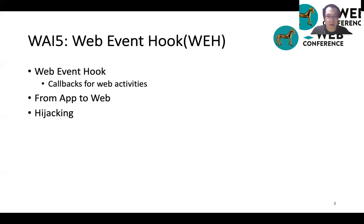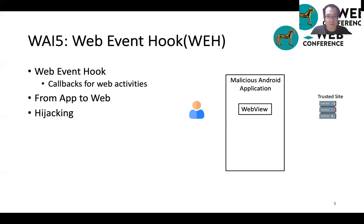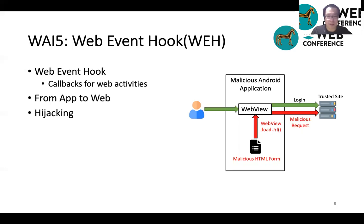The fifth mechanism is called Web Event Hook. WH provides a number of callback functions to intercept user activities. WH is the only mechanism that enables web app interactions from application to web content. To show the vulnerability of WH, here's an example. The user first logs into a trusted site through the WebView. The server returns a page for showing its content. Since the WebView.loadUrl event has been controlled by the malicious app, it can inject a malicious HTML form and send it to the server, which could edit or delete the user information on the target site. This attack is only possible because access control is missing for the web event hooks.